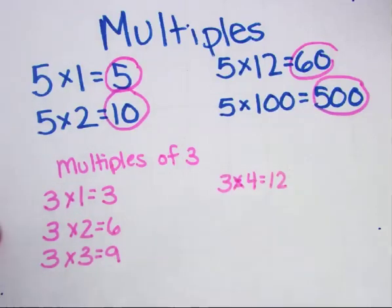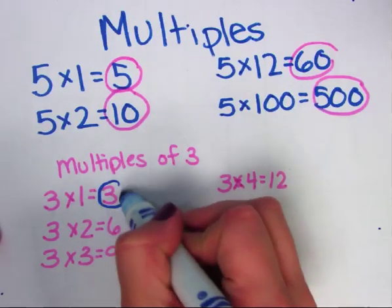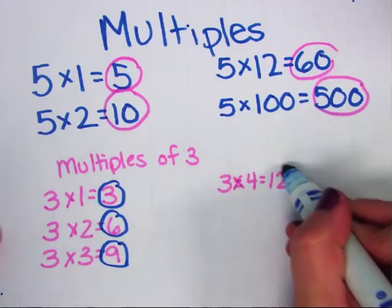So, my multiples of 3 that I have found are 3, 6, 9, and 12.